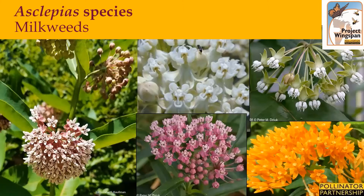As most of you know, milkweed species are the only plant species which serve as a host for monarch butterfly reproduction. We are including five species of milkweed in our collection efforts for Project Wingspan to support increased monarch oviposition or egg-laying. These include common milkweed, swamp milkweed, whorled milkweed, butterfly milkweed, and poke milkweed.